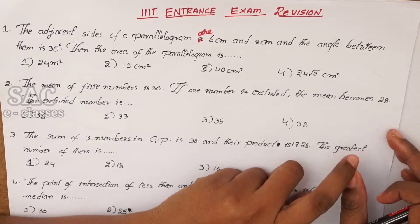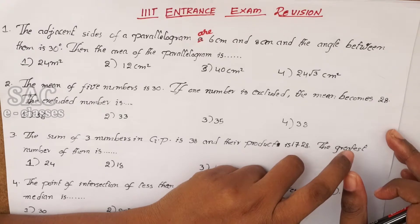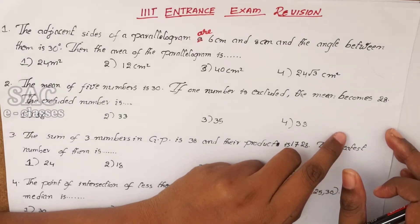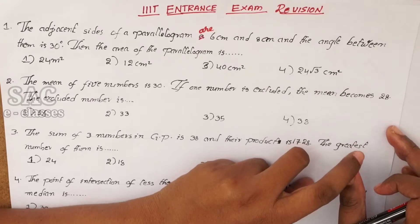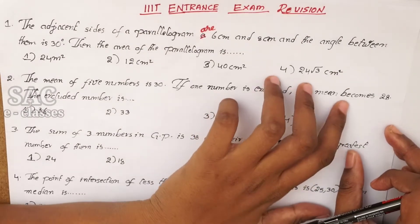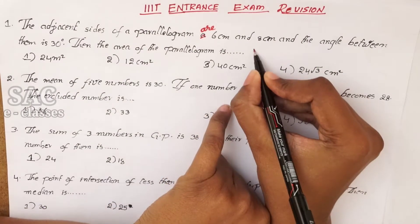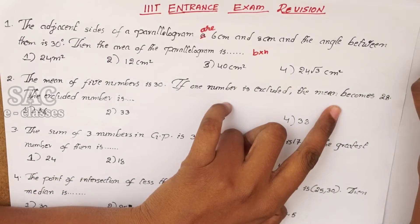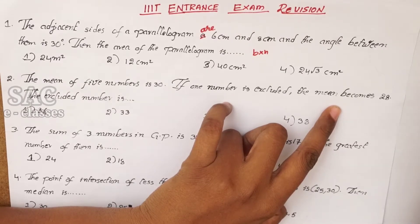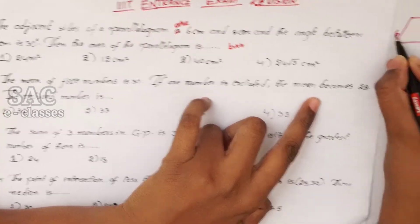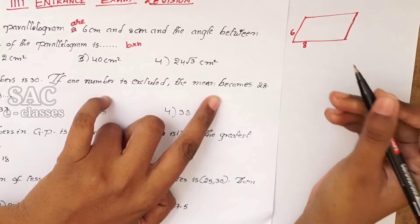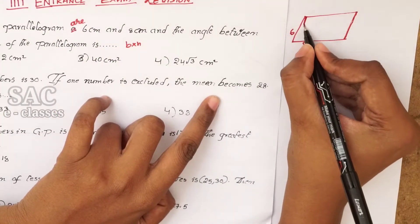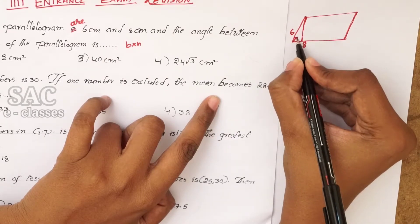First of all, they are given about the first problem. The adjacent sides of a parallelogram are 6 cm and 8 cm and the angle between them is 30 degrees. Then find the area of the parallelogram. Let me locate a parallelogram — the adjacent sides are 6 cm and 8 cm, and the angle between them is 30 degrees.